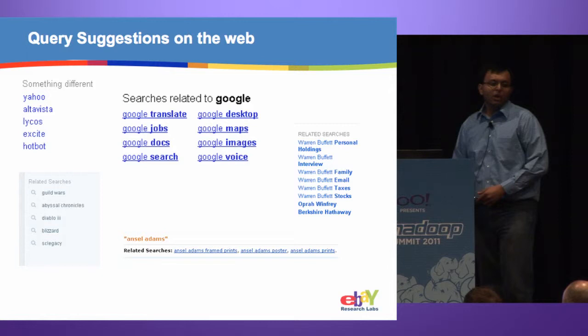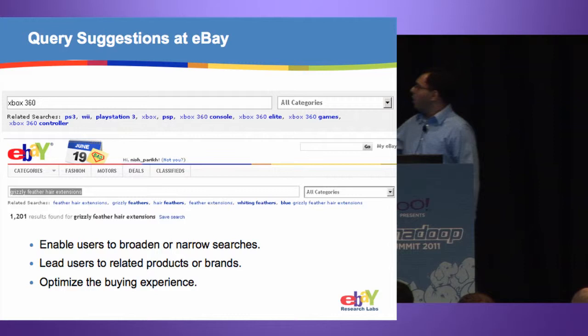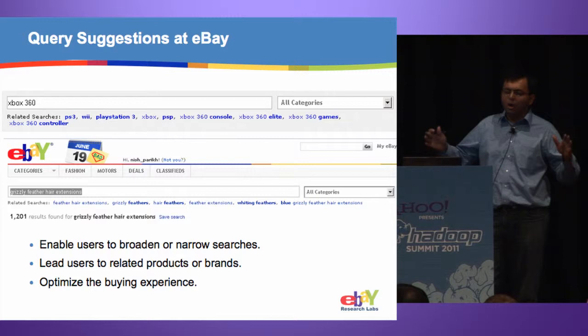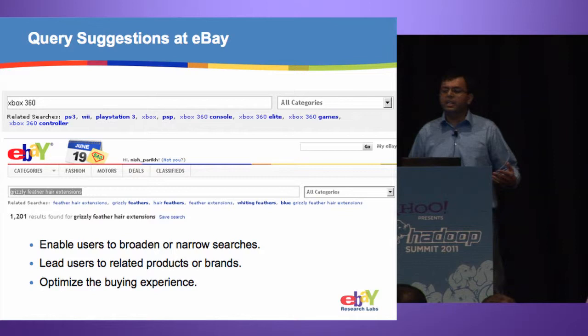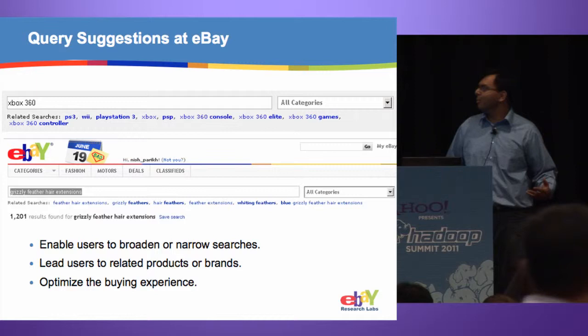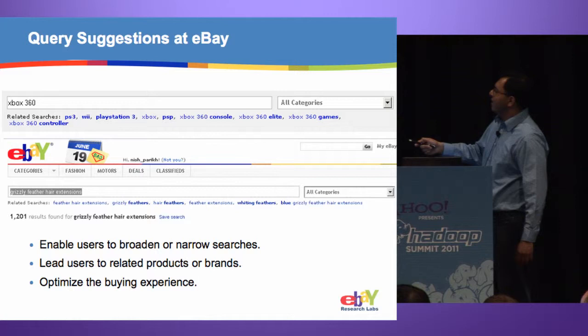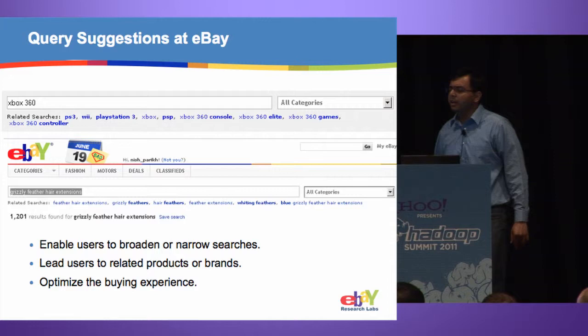On eBay.com, when a user searches for some term, the recommendations are seen at the bottom of the search box. The purpose of these recommendations is two-fold: first, it allows users to broaden or narrow their searches to become more focused and express their product intent better; second, recommendations serve as a mechanism of discovery, allowing users to explore newer or alternative brands and products. For Xbox 360, eBay provides options to focus toward games or consoles, and also alternatives like PS3.